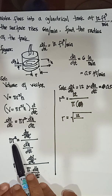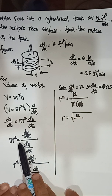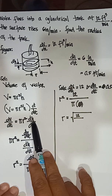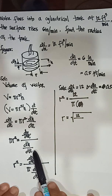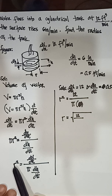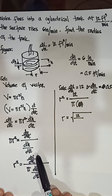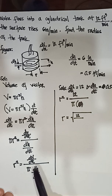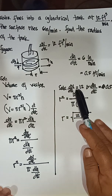Since you are solving for the radius, rearrange: π r² equals dV/dt divided by dh/dt. Cross multiply and isolate r², so r² equals dV/dt divided by (π times dh/dt).